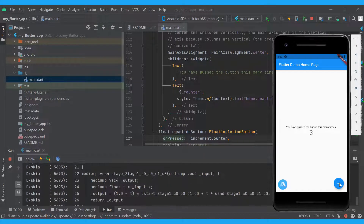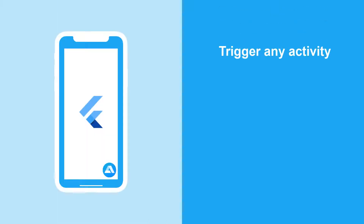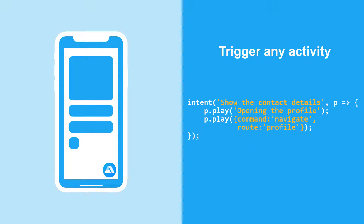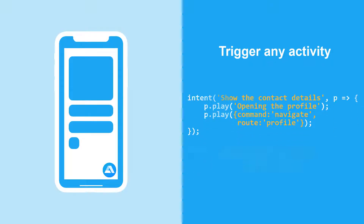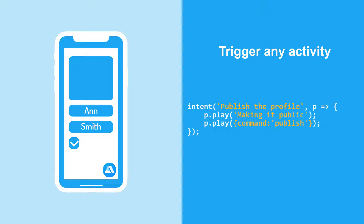This is a really simple example of how you can complete tasks in the app with voice. In a similar way, you can trigger any activity you need — for example, navigate between screens, populate fields with the data the user provides, enable and disable options in the app, and so much more.